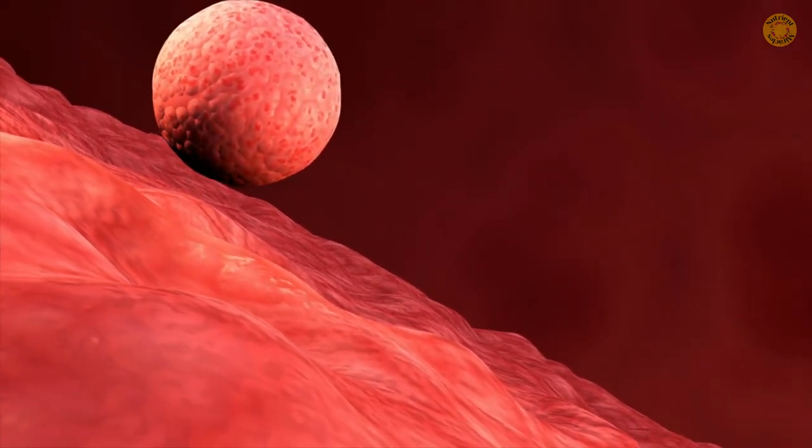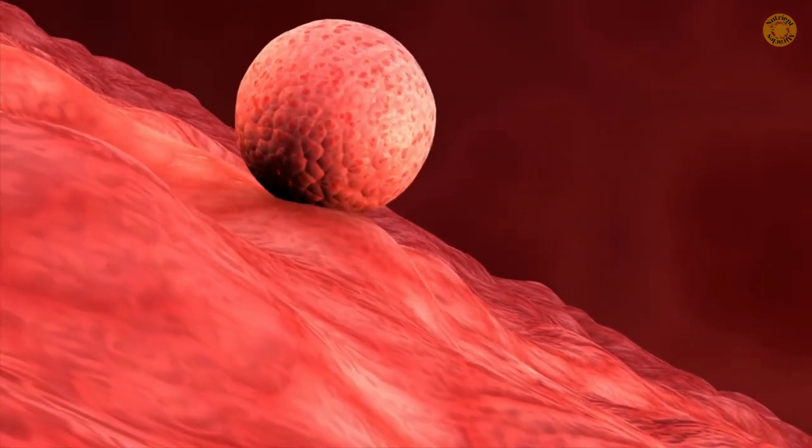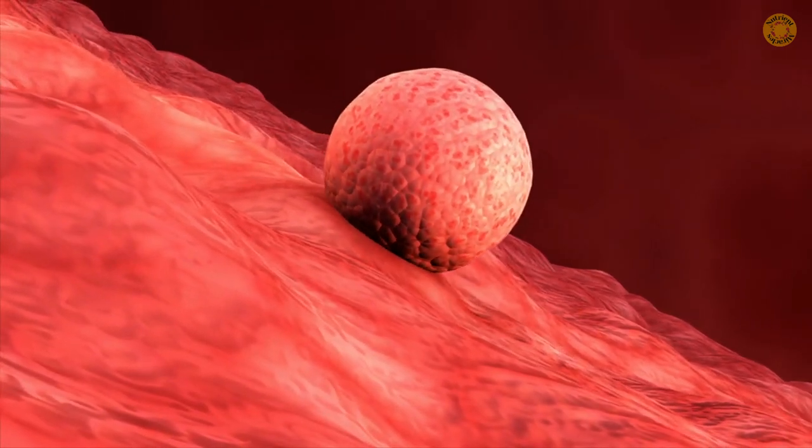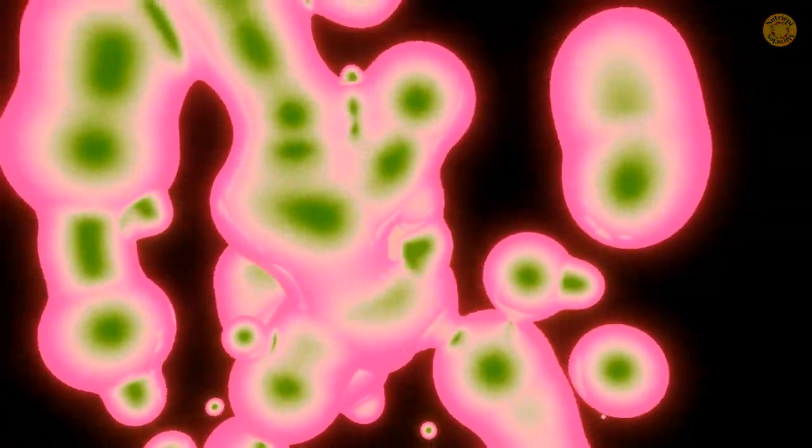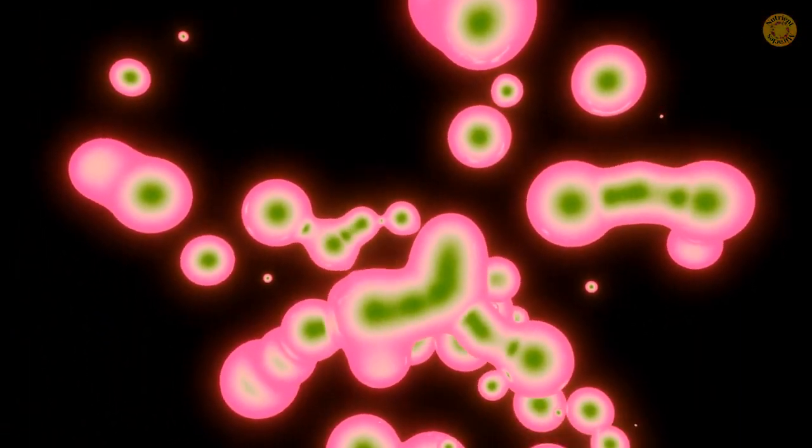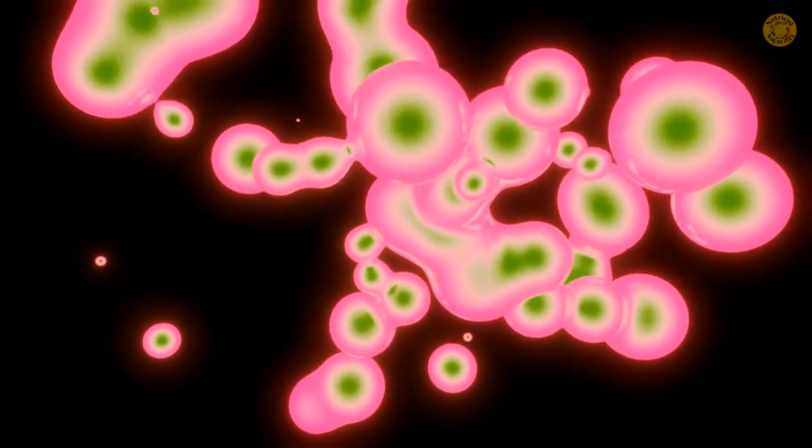Embryonic stem cells come from three to five-day-old embryos, known as blastocysts, containing about 150 cells. These pluripotent cells can divide into more stem cells or any cell type in the body, aiding in tissue regeneration.